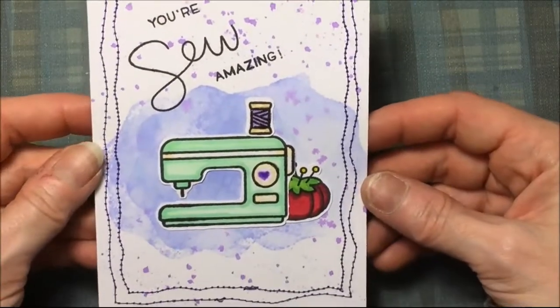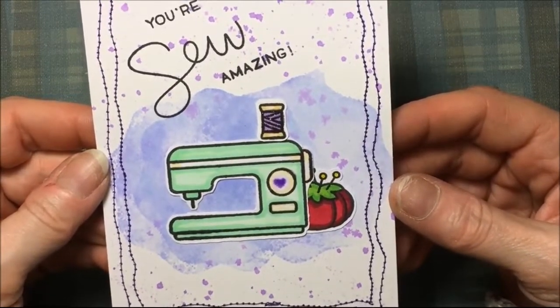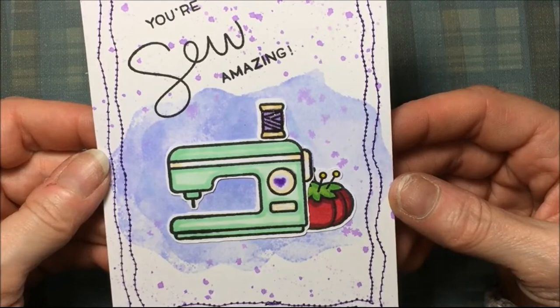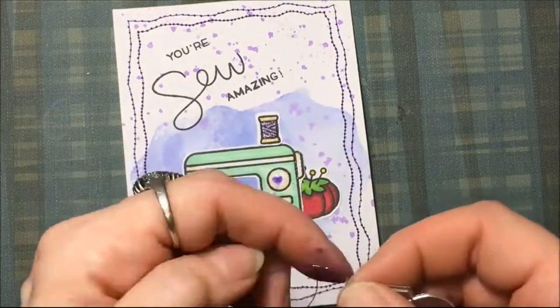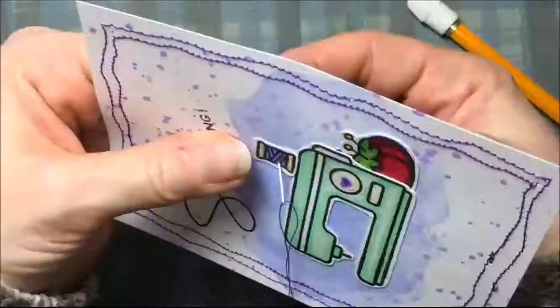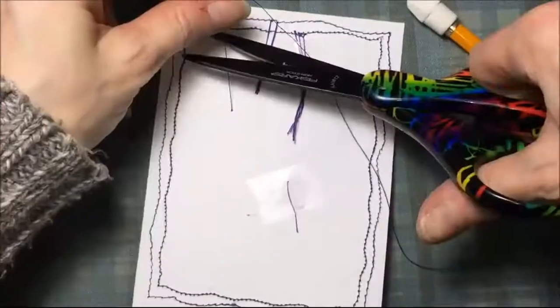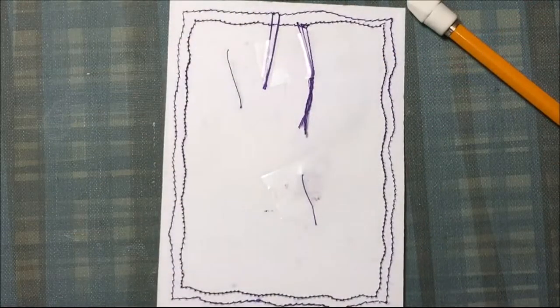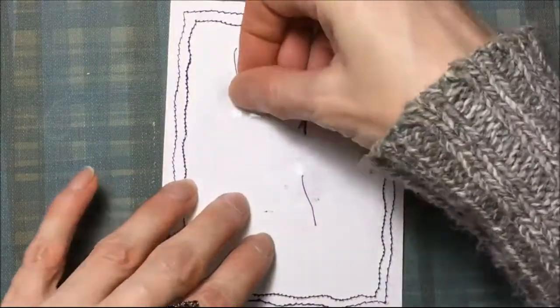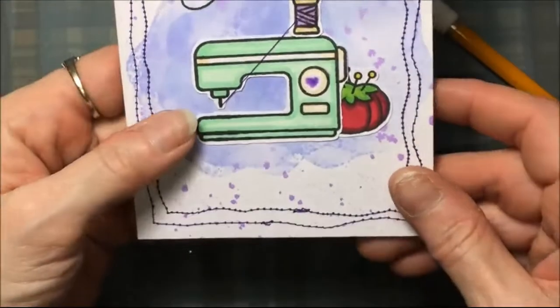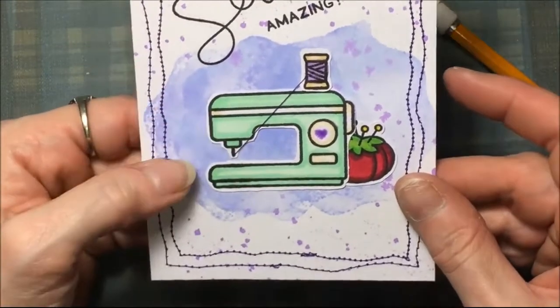I decided the card needed one more little finishing touch. So I'm going to take some thread, and I'm basically going to sew just one giant line from the spool of thread to the needle of the sewing machine. Then I just did the same thing, I just taped the loose ends so they wouldn't come undone. I'm glad I did that. It looks really cute. Just sometimes those little added touches just give a card a little something something, you know.